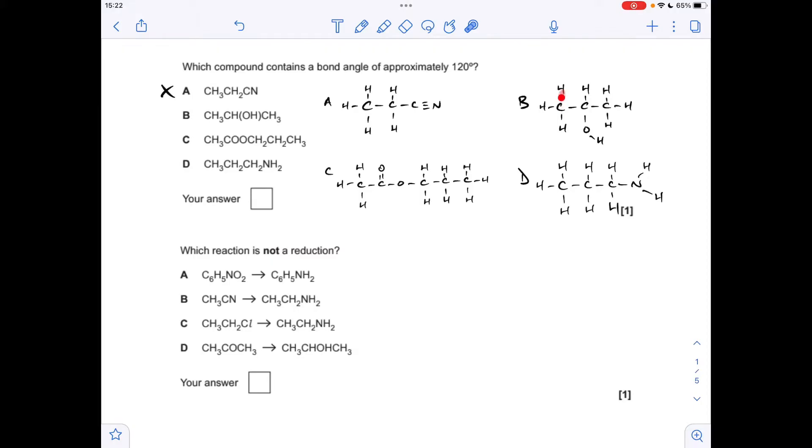Moving on to B, we've got 109.5 here, here and here. Whereas this angle here for the oxygen is 104.5. So it's not B. Moving on to C. So we've got 109.5 here, but there's 120. So this is the answer. We've got 104.5 there and these are all 109.5. We might as well look at D for revision purposes. So 109.5 and there and there. Whereas around that nitrogen, we've got 107.